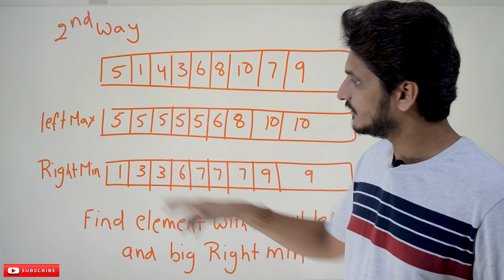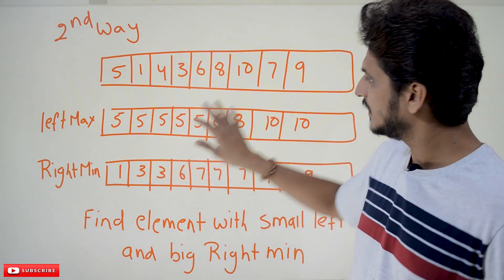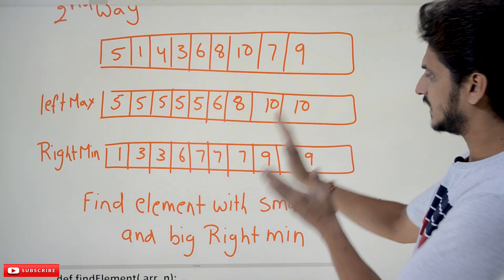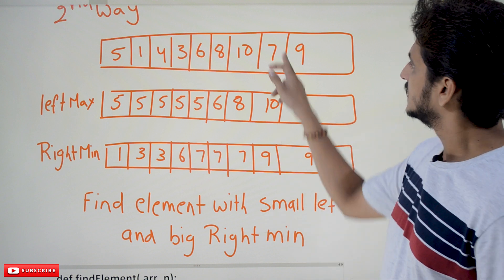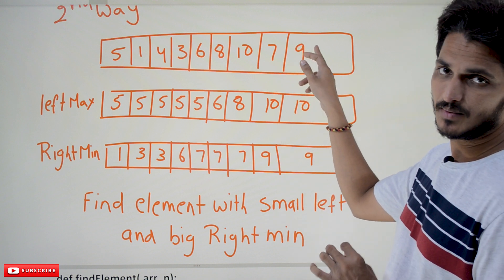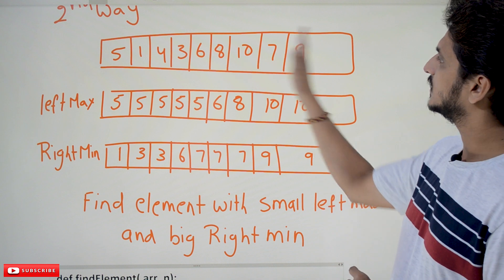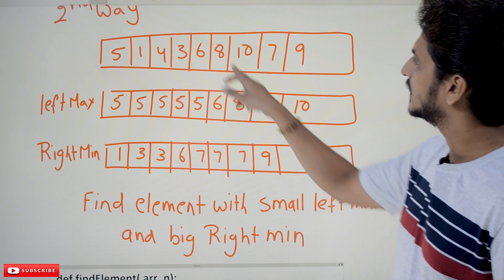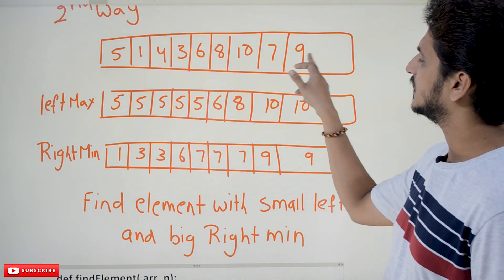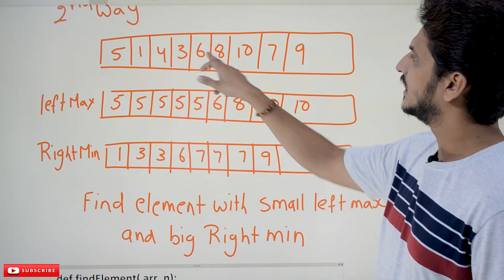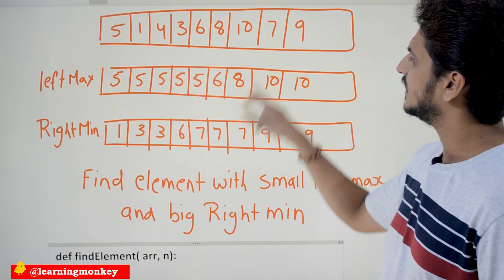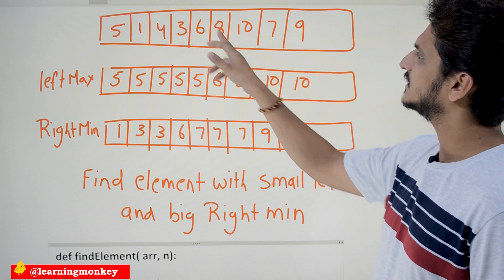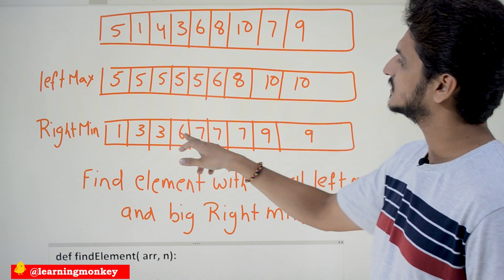Similarly, we have to identify the right min. Place the rightmost element as it is. For element 7, the right side is 9, so right min is 9. For 10, the right side is 7 and 9, so right min is 7. For 8, the right side is 10, 7, 9 — right min is 7. For 6, the right side is 8, 10, 7, 9 — right min is 7. For 3, the right side is 6, 8, 10, 7, 9 — right min is 6.